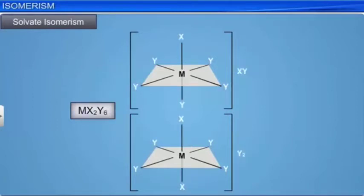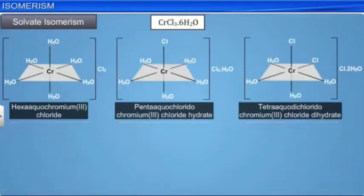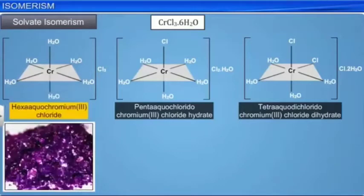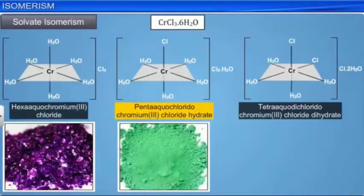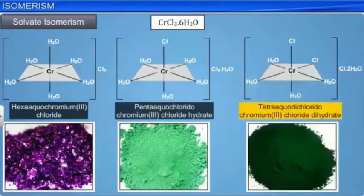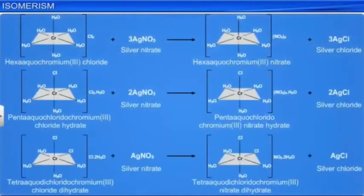Three isomers of chromium chloride hexahydrate, CrCl₃·6H₂O, are known. From conductivity measurements and quantitative precipitation of the ionized chlorine, they have been identified as the violet-colored hexa-aqua-chromium(3)-chloride, the green-colored penta-aqua-chloridochromium(3)-chloride hydrate, and the dark green-colored tetra-aqua-dichloridochromium(3)-chloride dihydrate. These isomers have different chemical properties. On reacting with silver nitrate to test for Cl⁻ ions, we would find 3, 2, and 1 chloride ions in the solution respectively.